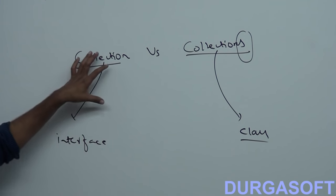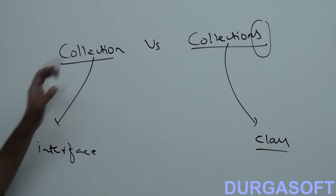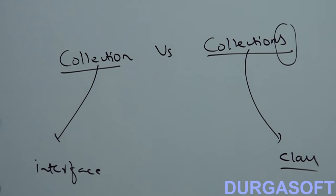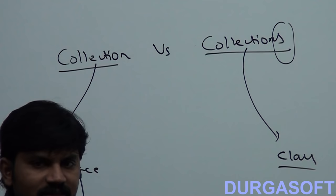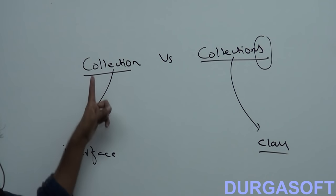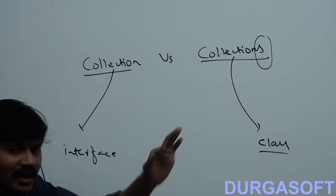When we should go for collection? If you want to represent a group of individual objects as a single entity, then we should go for collection. But what about collections?